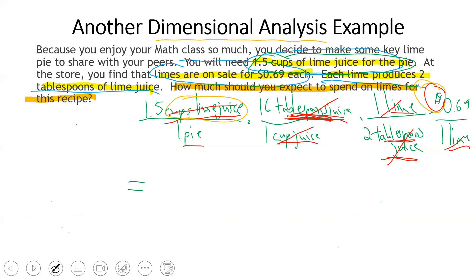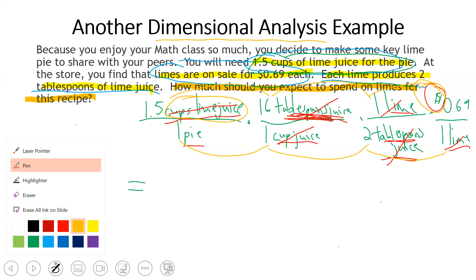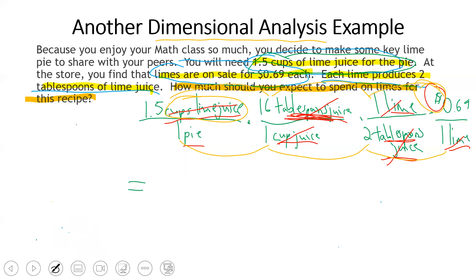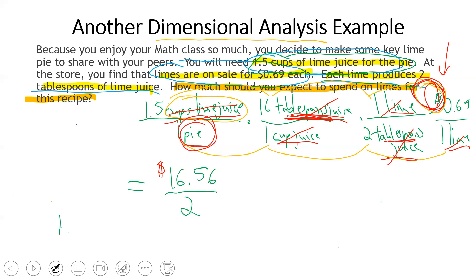Now we multiply across. The numerator is 1.5 × 16 × 1 × 0.69, and the denominator is 1 × 1 × 2 × 1. Multiplying across the top gives 16.56, and multiplying across the bottom gives 2. For units, the only thing not cancelled in the numerator is dollars, and the only thing not cancelled in the denominator is pie — so we have 16.56 dollars over 2 pies.